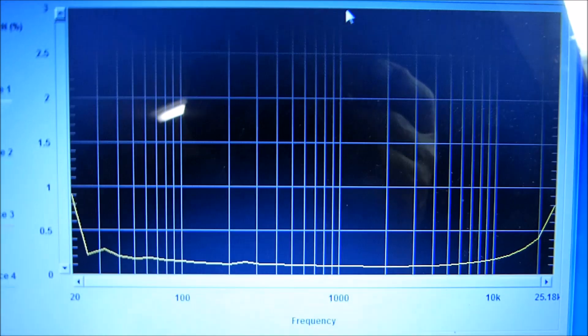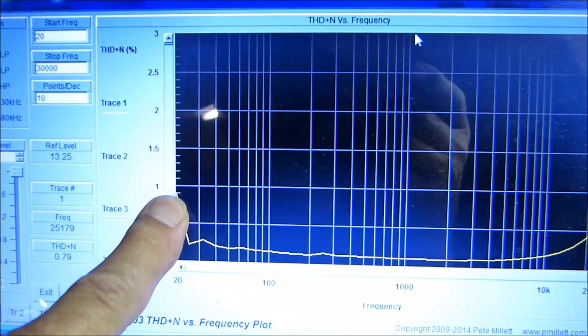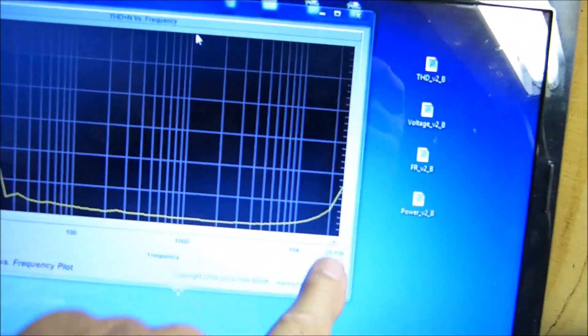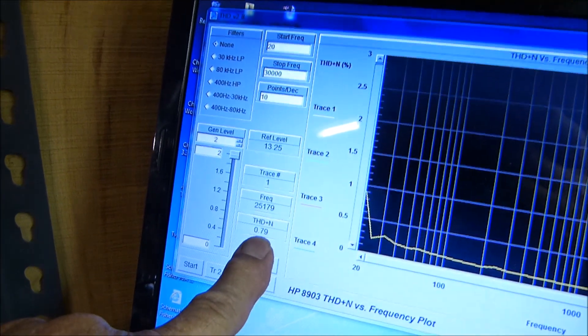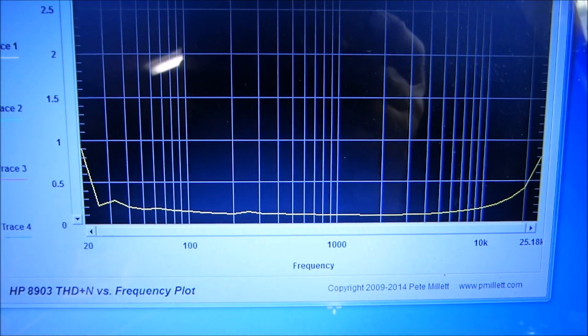Here is the scan of it right now. THD at 20 Hertz is 0.9%, at 25 kilohertz it's 0.79%. Nice flat response, really nice.